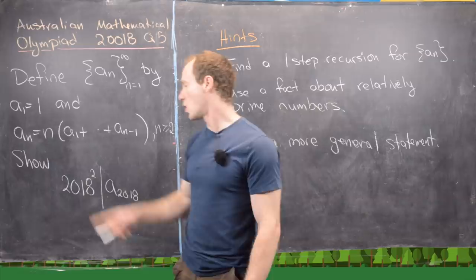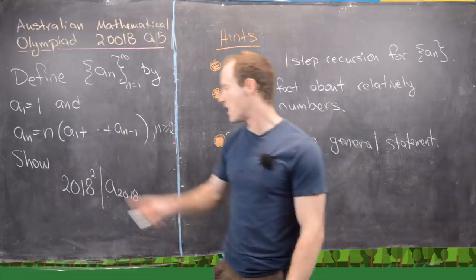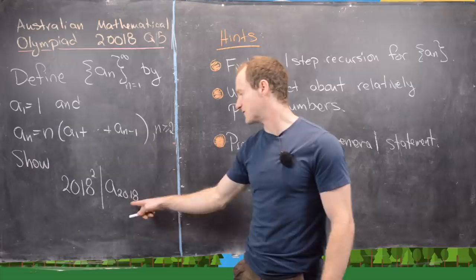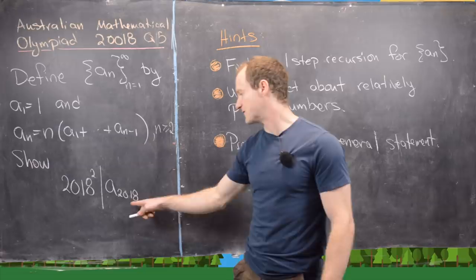Okay great. And then our goal is to show that a sub 2018 is a multiple of 2018 squared. In other words 2018 squared divides a sub 2018.